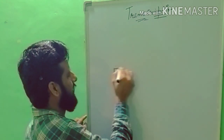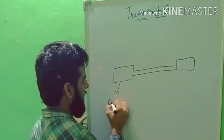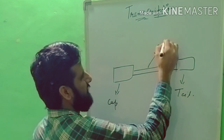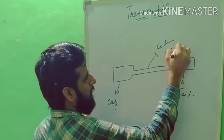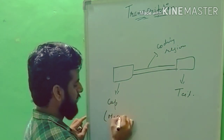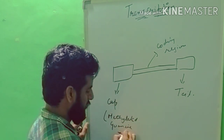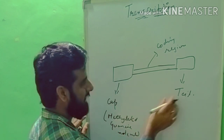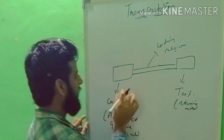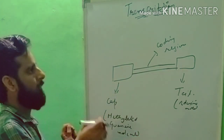Now we will show the structure of the mRNA. This is the cap, this is the tail, and this is the coding region. The cap is made up of a methylated guanine molecule and the tail is made up of adenine molecules. The cap and the tail are the non-coding regions, and between them the coding region is present.